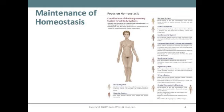In the digestive system, skin helps activate vitamin D, promoting absorption of dietary calcium and phosphorus in the small intestine. In the urinary system, kidney cells receive partially activated vitamin D hormone from the skin and convert it to calcitriol. Some waste products are also excreted in sweat. In the genital system, nerve endings in the subcutaneous tissue respond to erotic stimuli, contributing to sexual pleasure.